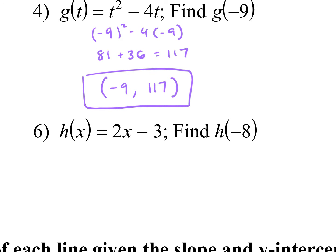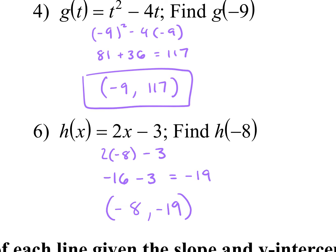Number 6, what should I do? Plug it in. So 2 times negative 8 minus 3. What's 2 times negative 8? Negative 16. And what's negative 16 minus 3? Negative 19. You guys are on fire today. How do I write my answer? Negative 8 comma negative 19.